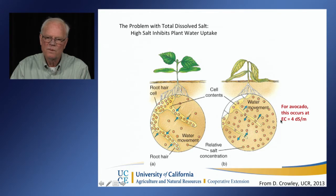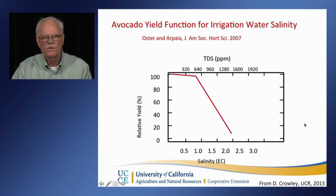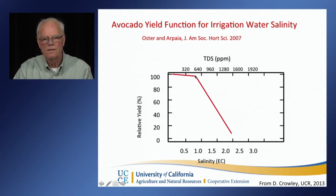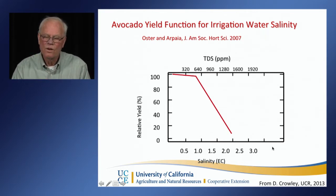For avocado, this movement of water out of the root zone occurs at 4.0 deci-siemens per meter, which is about 2,500 parts per million salinity. We have what's called a yield function: as salinity increases, yield remains fairly steady until about 1 deci-siemens per meter and then starts dropping in a fairly linear fashion, to the point where you can have significant yield loss at between 2 and 2.5 deci-siemens per meter. That is a fairly low salinity tolerance, and many of our well waters have salinity in excess of that.